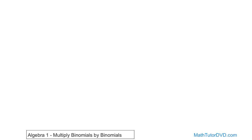So if we have, for instance, y plus 3 — that's a binomial because it has two terms — and we want to multiply that by another binomial, let's say y plus 2. That's why we call this section multiplying binomials times binomials. We have two terms surrounded by parentheses times another two terms surrounded by parentheses.